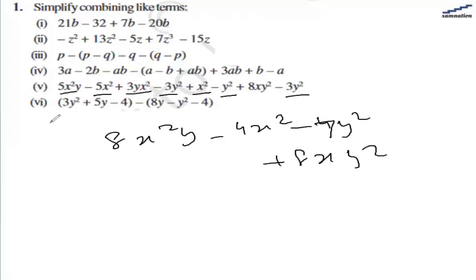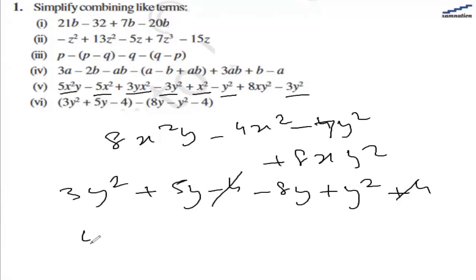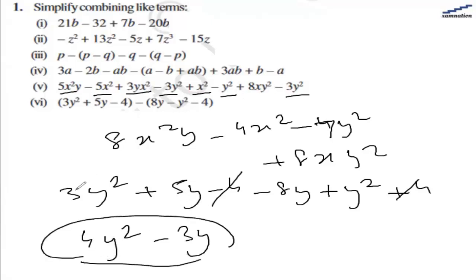For the sixth part, let's open the bracket first. So we have 3y square plus 5y minus 4, and minus 8y plus y square plus 4. The 4 and minus 4 will cancel out. And we have 4y square and minus 3y. So that is the answer for the sixth part.